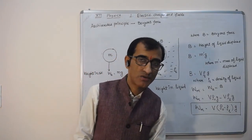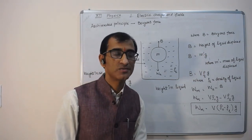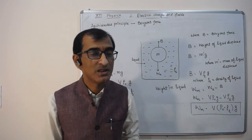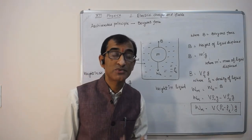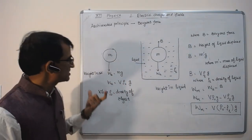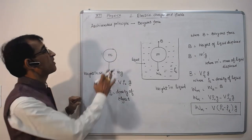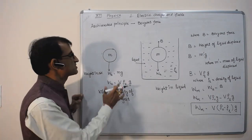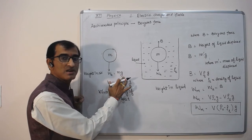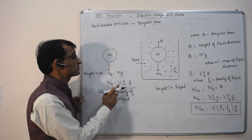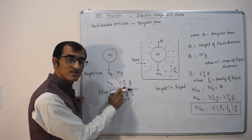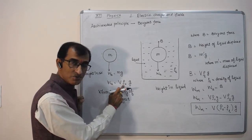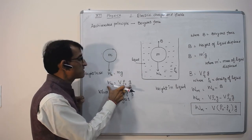The second basic concept is Archimedes' principle. According to this principle, whenever we submerge an object in a liquid, the object experiences an upward force known as the buoyant force. The weight of the object is the force applied by the earth, equal to mass multiplied by gravitational acceleration g. This can be written as: weight in air = volume of the object × density of the object × g.